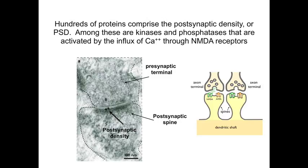The proteins involved in synaptic weakening and synaptic strengthening — that is, long-term depression and long-term potentiation — are localized in the postsynaptic density, and thus are localized at the sites where they exert their effects in the postsynaptic cell.